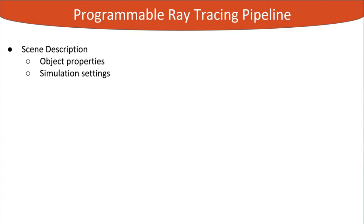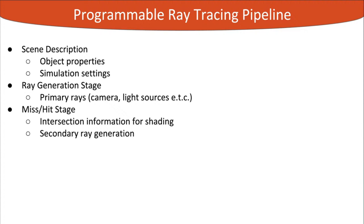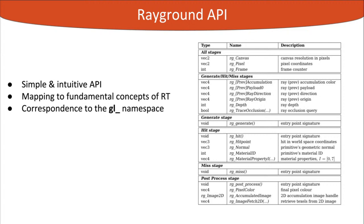The configurable stages are: scene definition where the user specifies object properties and global simulation settings; a ray generation stage for primary rays; miss or hit stages where intersection data become available and new rays are spawned; and a post-processing stage which completes image synthesis for the current rendering frame. Here is a quick reference to the Rayground API — we only want you to get a sense of how it is structured.